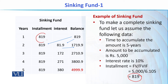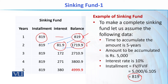When we deposit the first installment, we earn no interest initially, but after that balance sits in the account for one year, we earn 10% interest — which is 81.9 rupees. So the balance after one year is 819 rupees, but after two years it becomes 1,719.9 rupees: the previous balance plus the second installment plus the interest earned on the first-year balance. In the same way, we keep calculating interest and balance for each subsequent year.